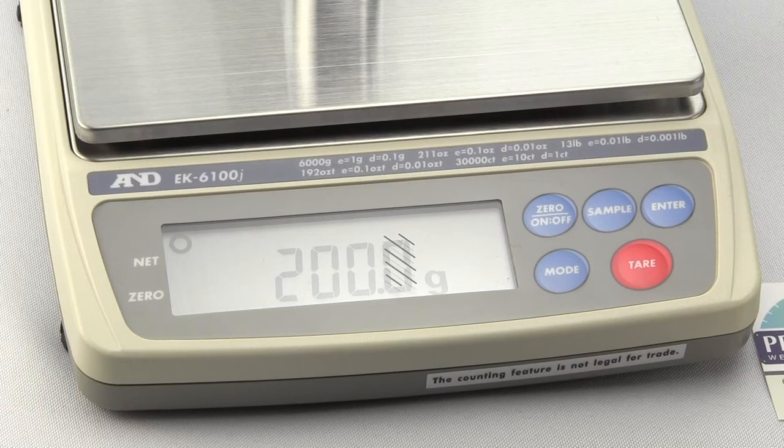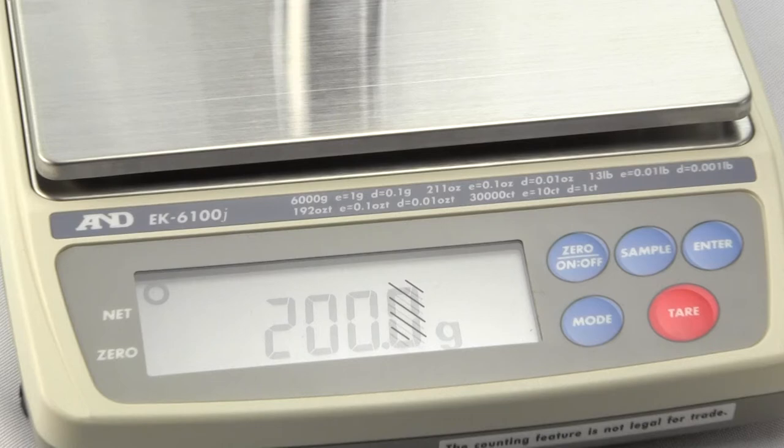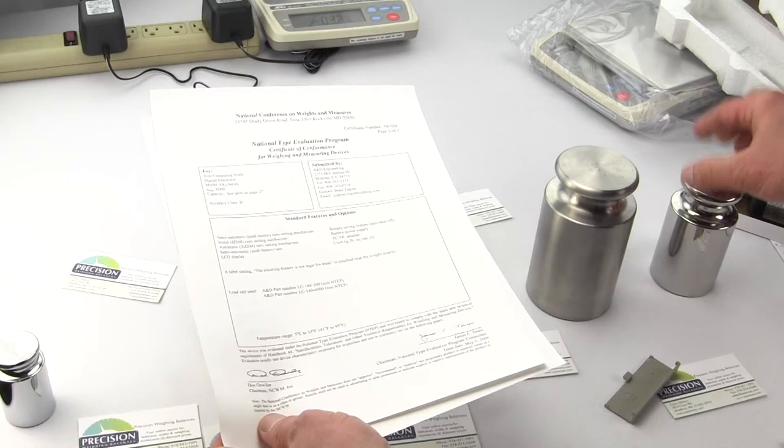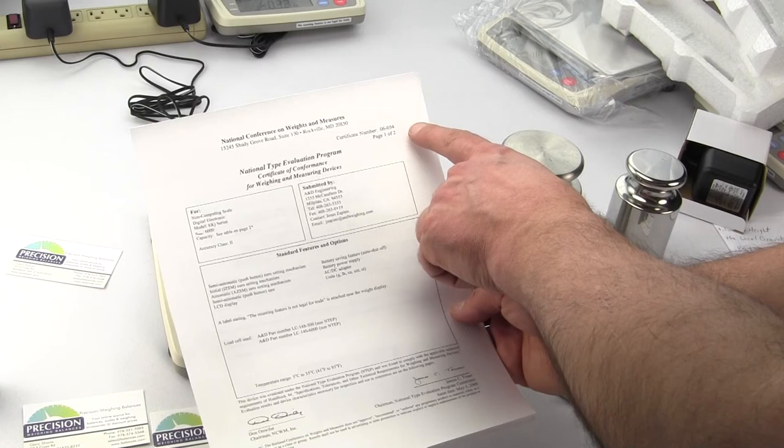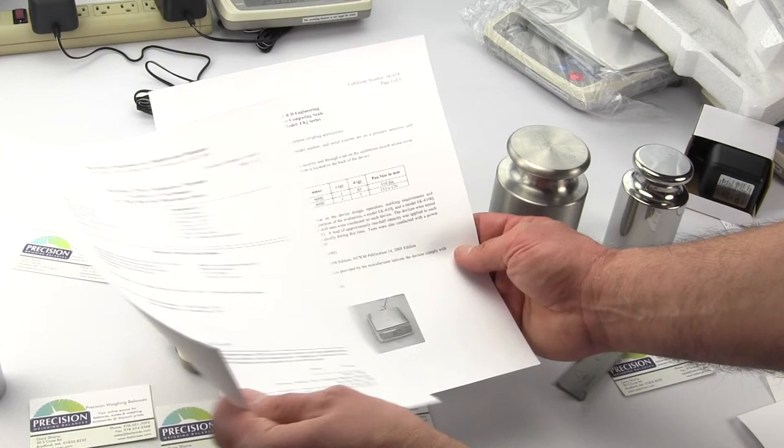This scale is legal for trade. So I just want to show you. This is the certificate of conformance. You can download this from our website. And it just shows you here the certificate of conformance number. It explains the scale, the models that are included. And on the next page here, it talks about, right here, test conditions and what they actually do.